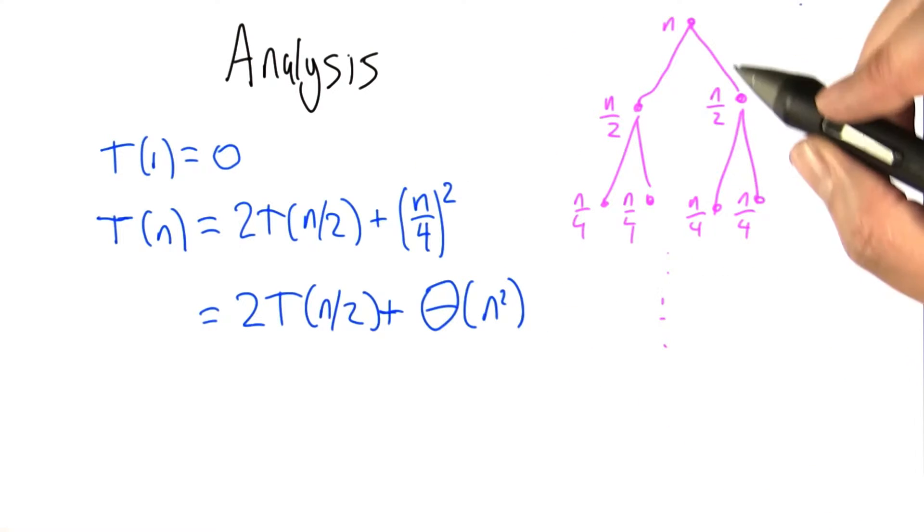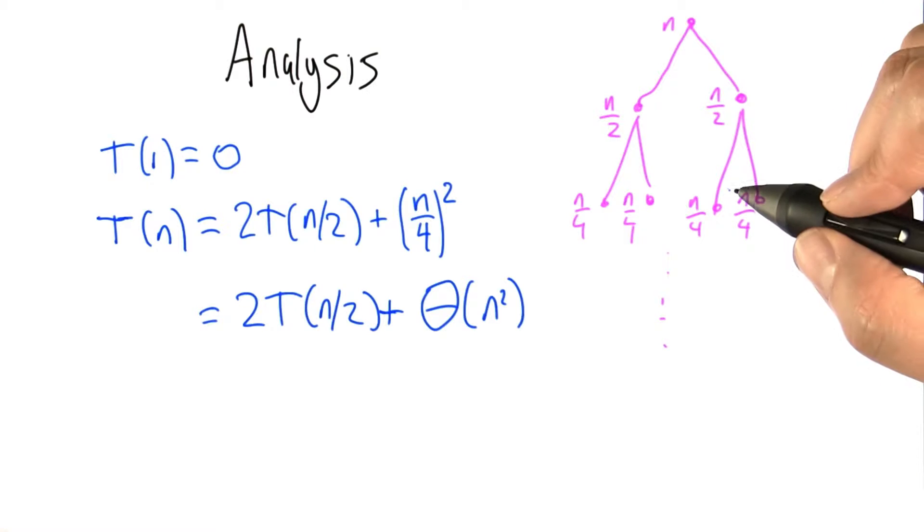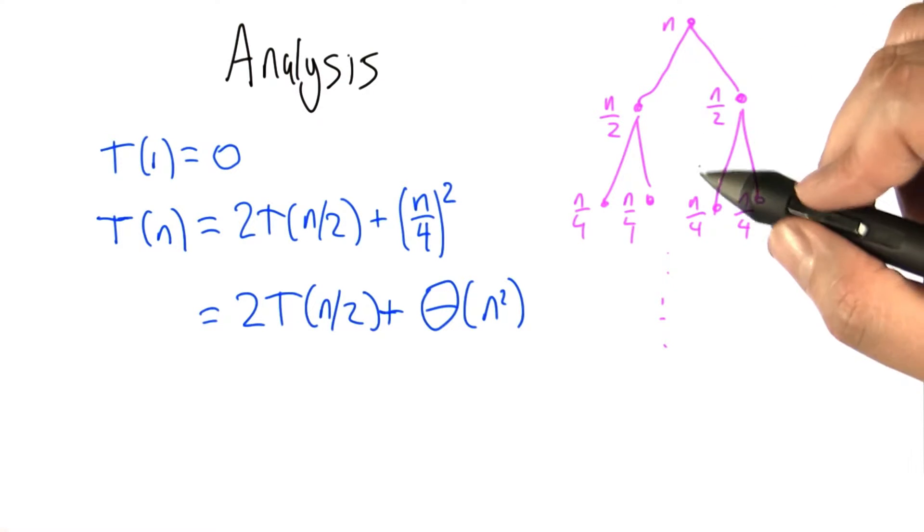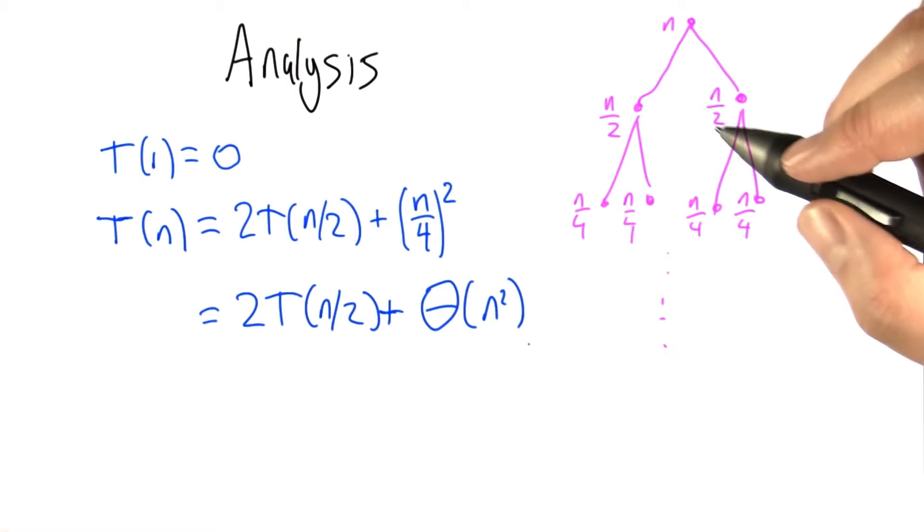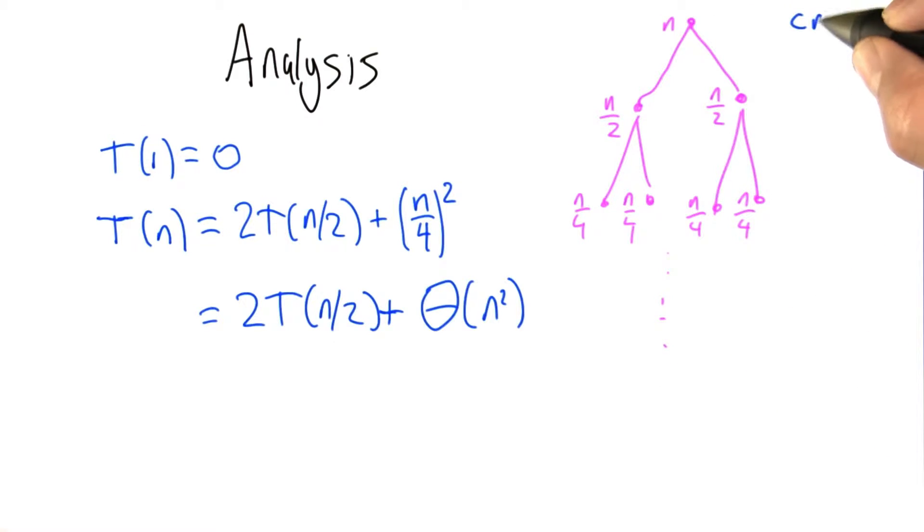All right, let's take a look at what happens in this same kind of tree structure as before where the amount of edges that we add at each of these levels is some big theta of n squared. So at the top level, it's going to be cn squared. The next level down, it's going to be c times n over 2 squared,